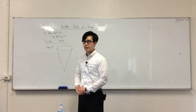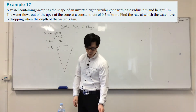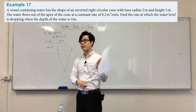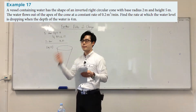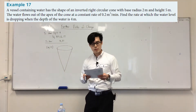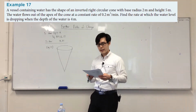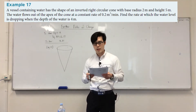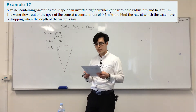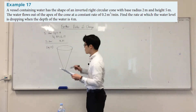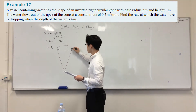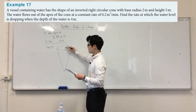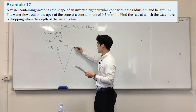Let's have a look at Example 17. A vessel containing water has the shape of an inverted right circular cone — that's what I've drawn. It has a base radius of two meters and a height of five meters.